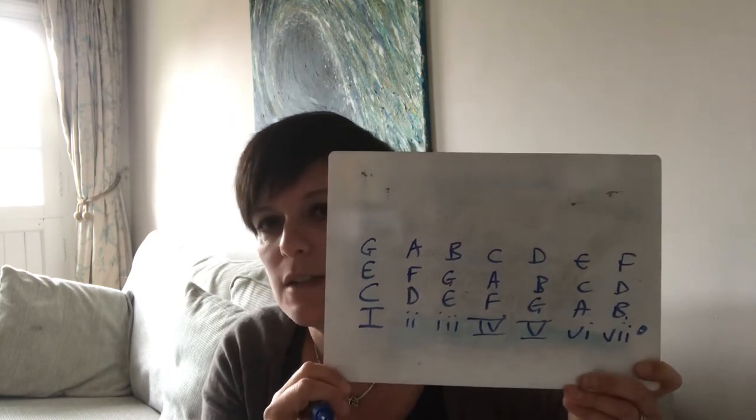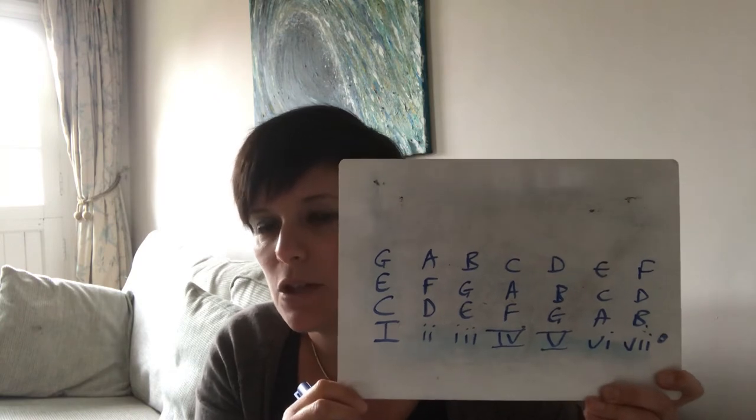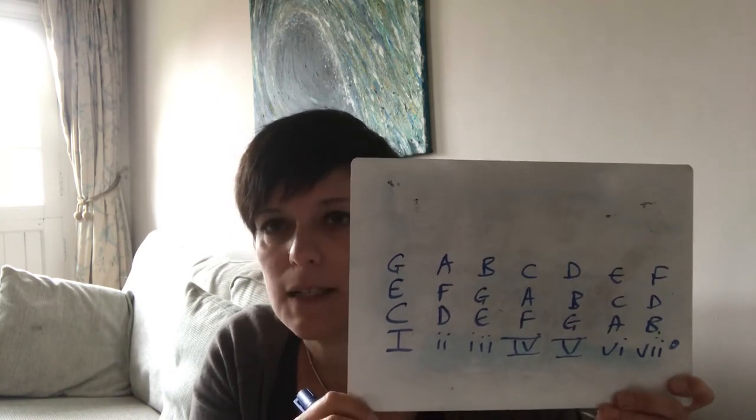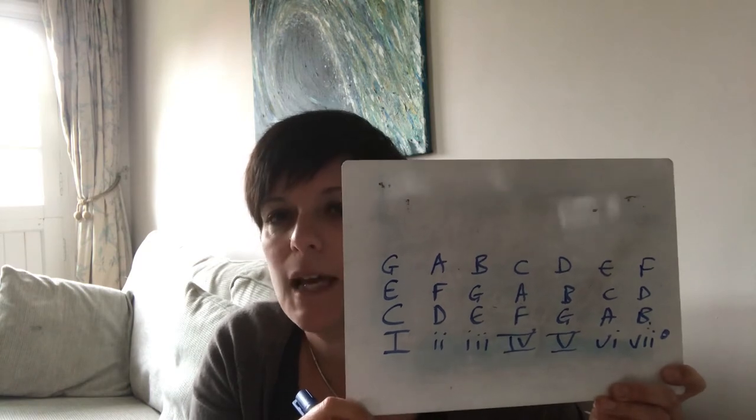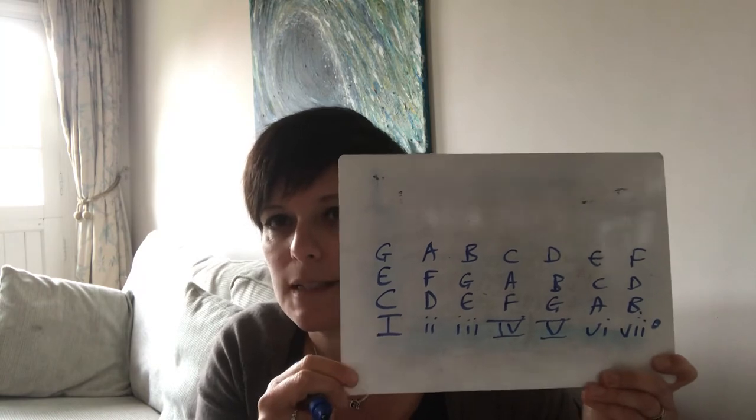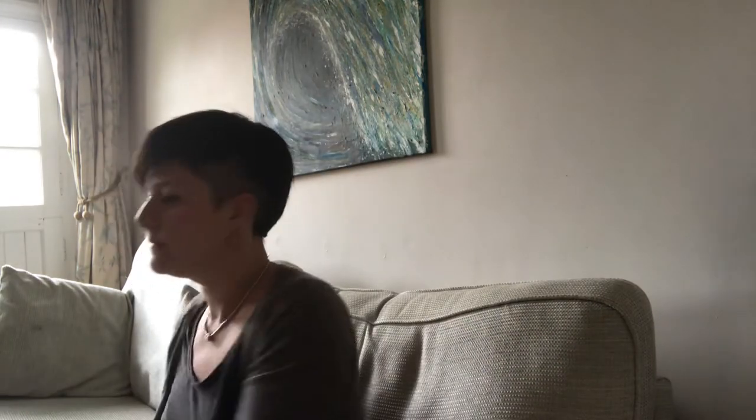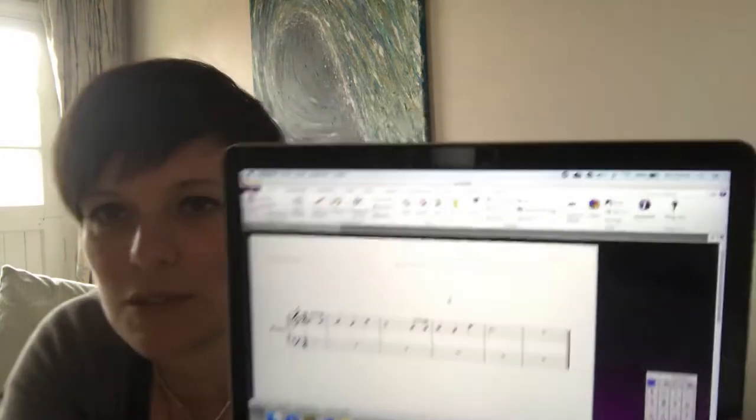Now that enables us to harmonize a melody that is in C major. So I'm going to show you in a moment on Sibelius a melody which you'll recognize as Happy Birthday and we're going to try using this table to be able to harmonize the melody. So if I just show you that, let's get the brightness and contrast.